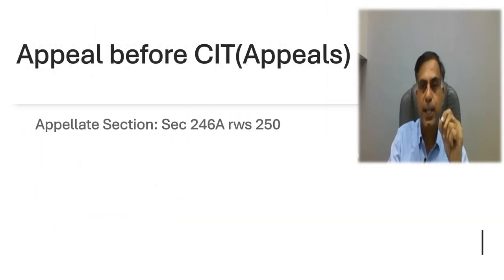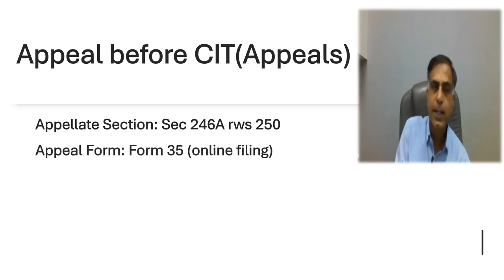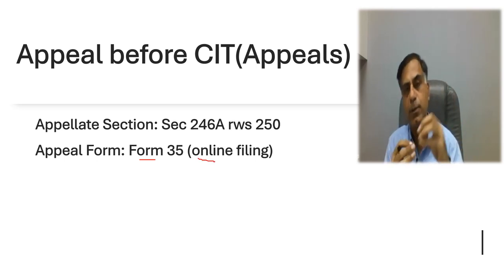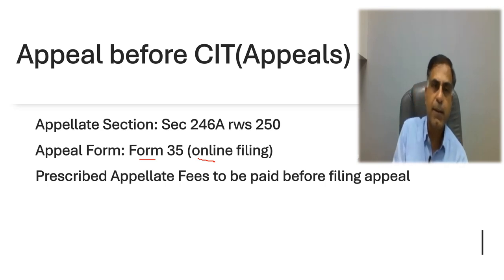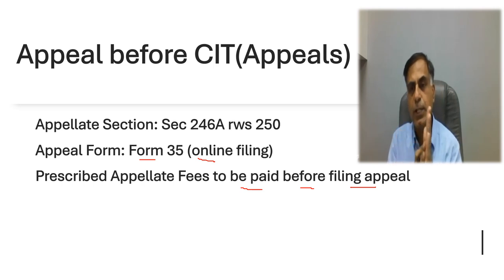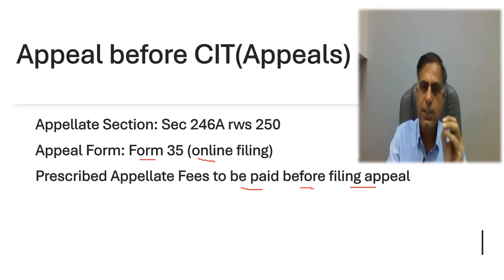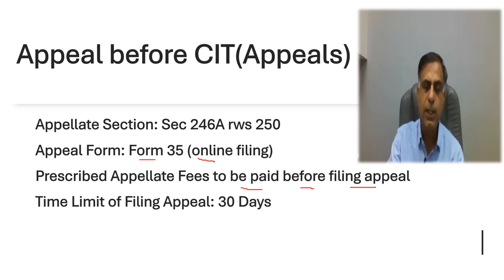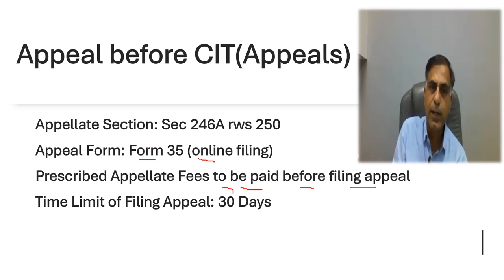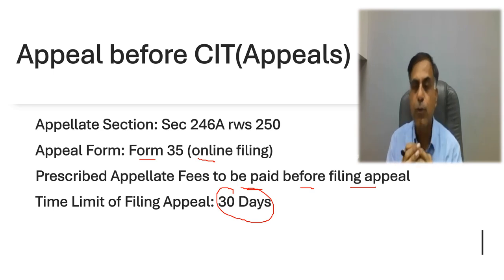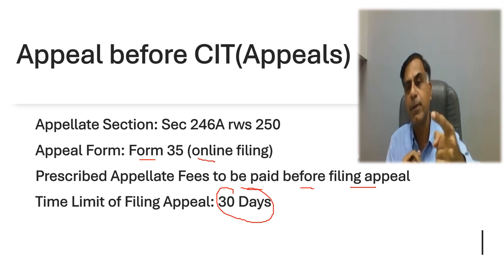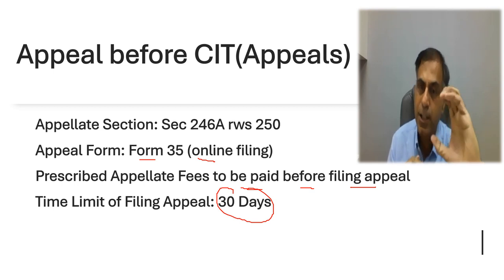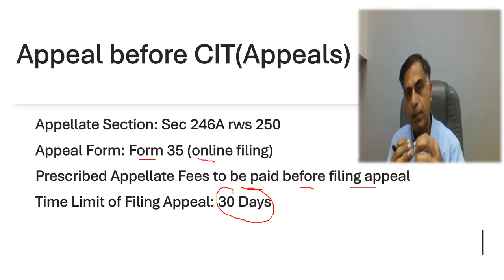Now let me give you a brief idea of appeal before CIT Appeals. Appeal before CIT Appeal is filed under section 246A read with sections 249 and 250 of the Income Tax Act 1961. Such an appeal should be filed online only on your Income Tax Portal. Form 35 needs to be filed in this regard. The prescribed appellate fees, which is to be paid, is also mentioned in the law and should be paid upfront — this fee is minimal. The time limit for filing appeal before CIT Appeals is 30 days from the date of receipt of the relevant demand notice or the other order as the case may be. Under section 156, a demand notice is issued in consequence of an assessment, penalty, or rectification order. Within 30 days from the date of receipt of that demand notice, the appeal should be prepared.